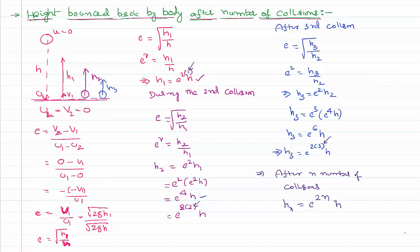After the first collision you got e^(2×1) times h, after the second collision e^(2×2) times h, after the third collision e^(2×3) times h. That implies after n number of collisions you get e^(2n) times h, where n is the number of the collision and h is the height from which the body started falling freely with zero velocity. Like this, we can calculate the height bounced back by the body after n number of collisions.